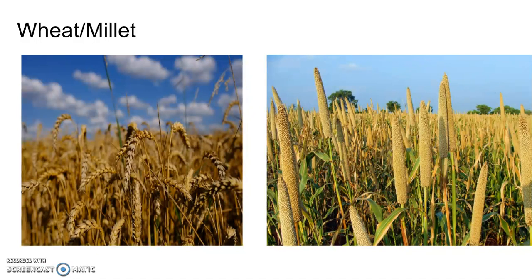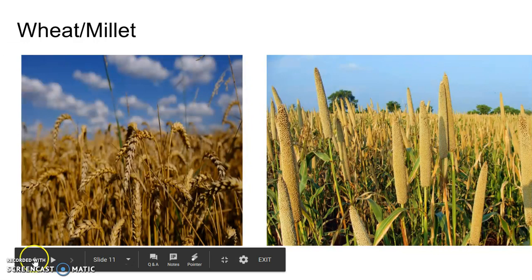This concludes our review of the different types of subsistence agriculture. We covered shifting cultivation, pastoral nomadism, intensive subsistence wet rice dominant, and intensive subsistence wet rice not dominant. Thank you.